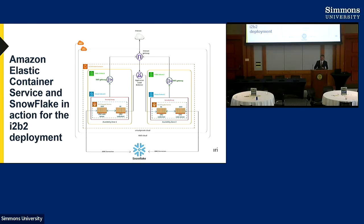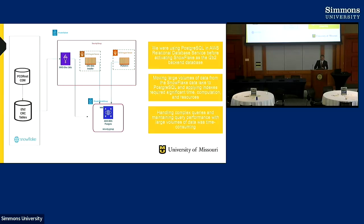Previously, our architecture was less effective cost-wise and had performance issues. Our data lake operations were in Snowflake but i2b2 was on PostgreSQL, so we had to migrate data into PostgreSQL — that took extra time managing the pipeline. Instead of automating that pipeline, we invested our energy to see if we could activate Snowflake behind i2b2. That was a great advantage — activating one more database platform to support i2b2 running on Snowflake.